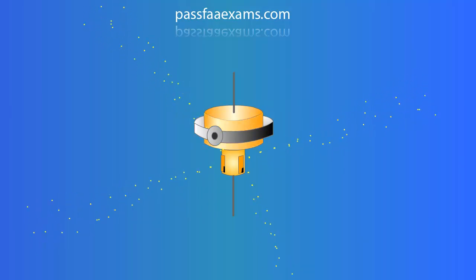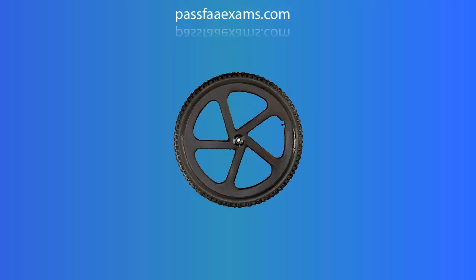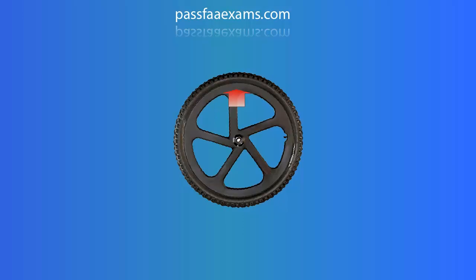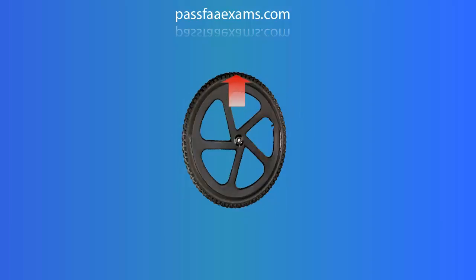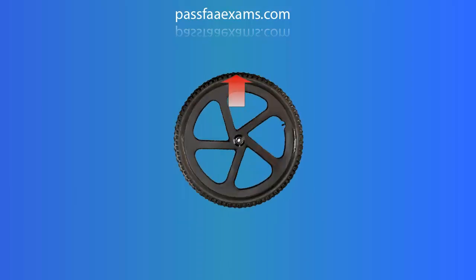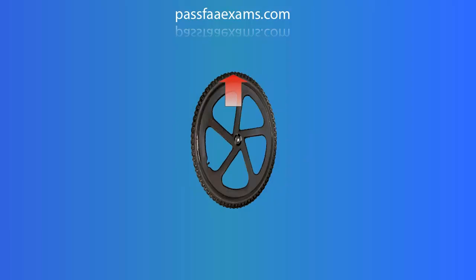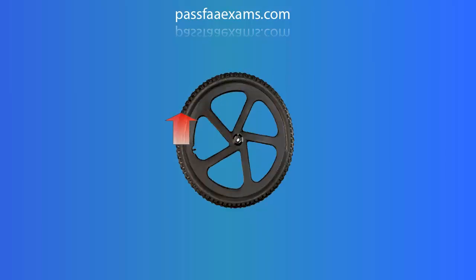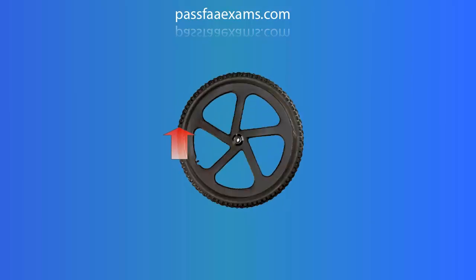So for example, if we have a spinning bicycle wheel and then we decide to hit the top of the wheel, the wheel will wobble sideways as shown rather than vertically where we actually applied the force. This is because that force moved 90 degrees in the sense of rotation of that wheel and then was applied.